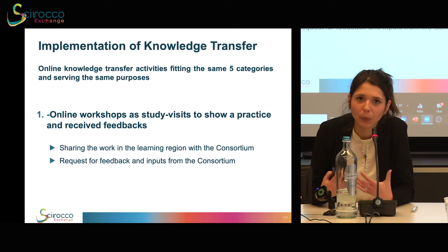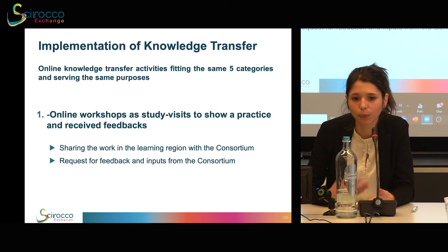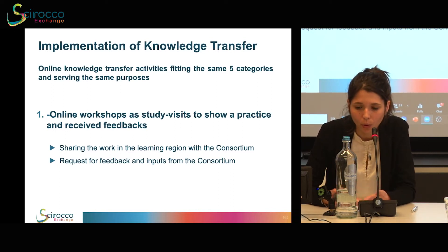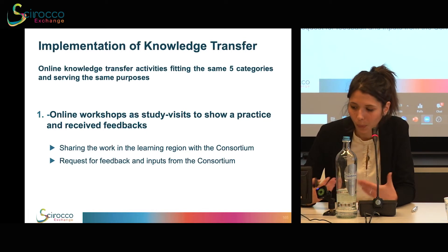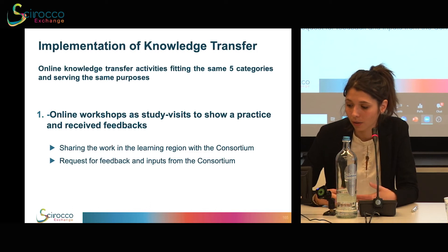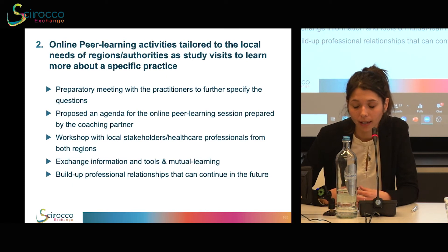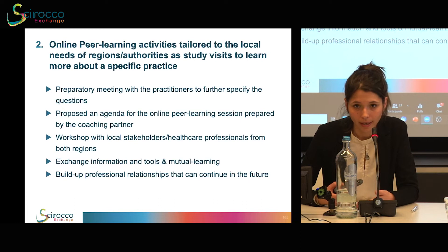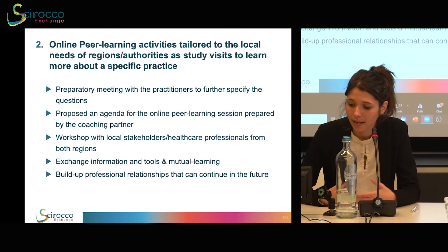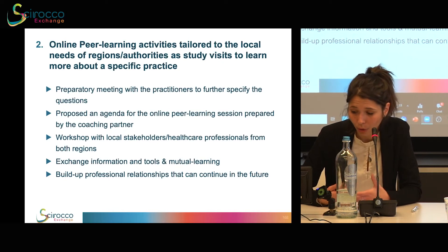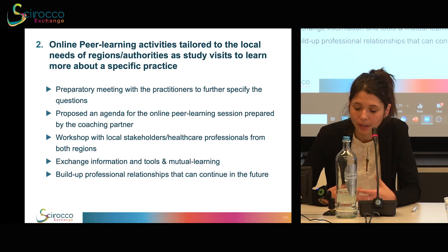What was eventually developed was a series of knowledge transfer activities that fit the same five categories initially identified, but taking place online. We had online workshops that worked as study visits to show a practice and receive feedback — for example, partners shared their work and the learning region shared their work with the consortium to receive additional feedback and guidance. We also had online peer learning activities tailored to the local needs of the region acting as a learning partner, working as a study visit to learn more about a specific practice.